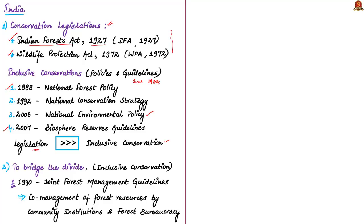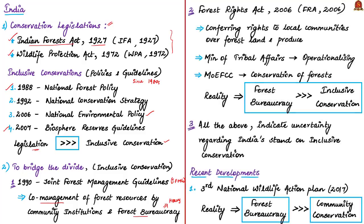In an attempt to bridge this divide, the 1990 Joint Forest Management Guidelines were introduced by the government. These guidelines created community institutions for co-management in collaboration with the forest bureaucracy. Although it initially registered some success stories in certain parts of the country, the Joint Forest Management Committees are widely critiqued as being bureaucracy-heavy, with little real devolution of powers to the local communities.